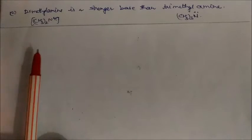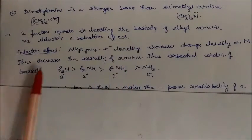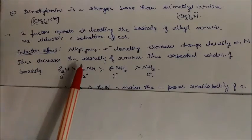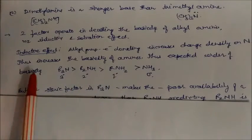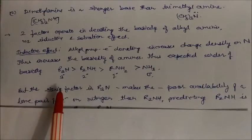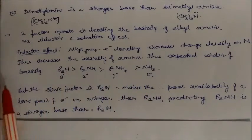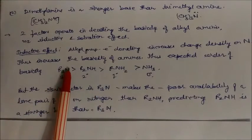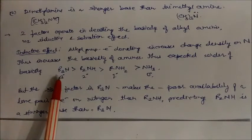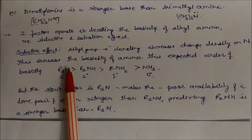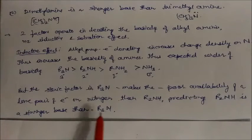Dimethylamine is a stronger base than trimethylamine. Two factors operate in deciding basicity: the inductive effect and the solvation effect. Alkyl groups are electron-donating, increasing charge density on nitrogen, which increases basicity. By inductive effect alone, the expected order is R₃N > R₂NH > RNH₂ > NH₃. However, in trimethylamine the steric factor is very high — three methyl groups surrounding the nitrogen make the lone pair poorly available. Therefore, R₂NH is the stronger base than R₃N.